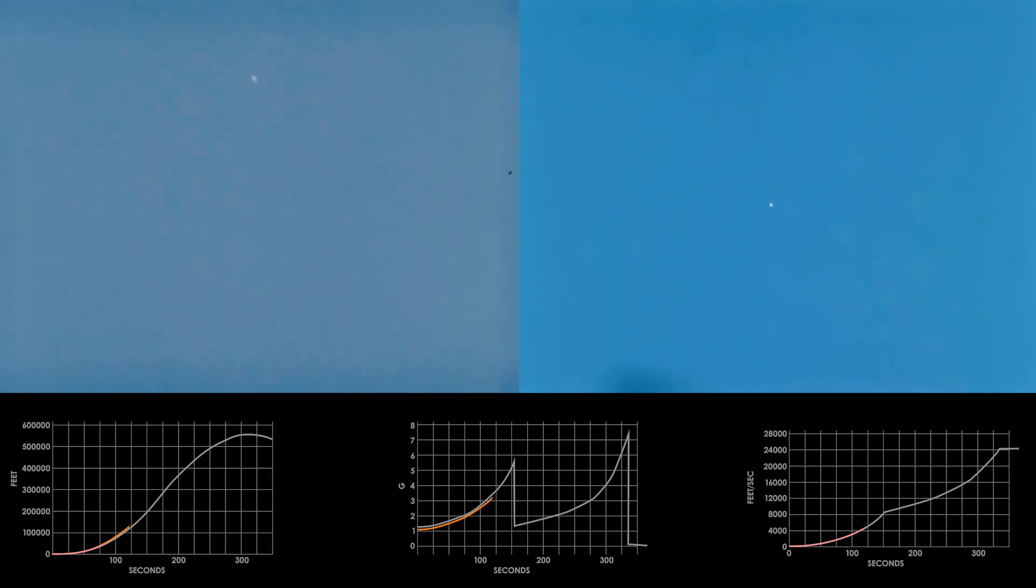RKD. Cabin pressure holding nicely at 5.8, 5.8 PSI. We have a good green report on both primary and backup guidance systems. 2 minutes and 20 seconds into the mission. We've got second stage thrust good. RKD, copy.